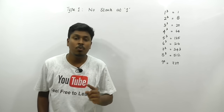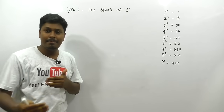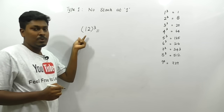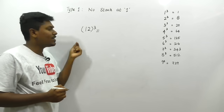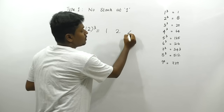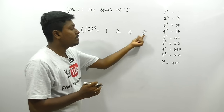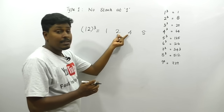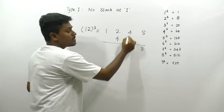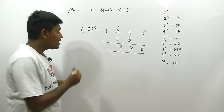Let's move to Type 1 — numbers that start with 1. For 12³: write the same number as it is — 1, 2. Then write the second number squared (2² = 4) and the second number cubed (2³ = 8). Leave the first and last numbers, then double the two center numbers: double 2 is 4, double 4 is 8. Adding: 8, then 4+2=6, then 6+1=7. So 12³ = 1728.